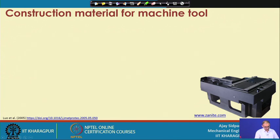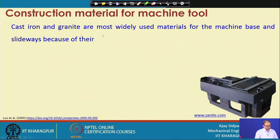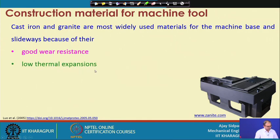Now, regarding construction materials for machine tools: cast iron and granite are the most widely used materials for machine bases and slideways. Cast iron offers good wear resistance — you will find it in conventional lathe and milling machines. Granite is next to cast iron and also widely used; it has low thermal expansion, which is important because conventional machines installed without enclosures experience temperature differences of 30–40 degrees between summer and winter.